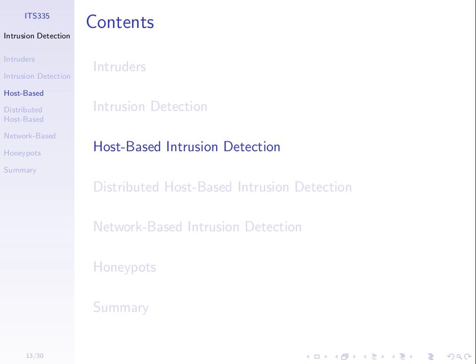We want to be able to detect when someone's trying to intrude into our computer system or network — when someone's trying to attack us and log in remotely or do something malicious. We've talked about the types of intruders and the general concepts of intrusion detection, but we'll come back to that with some examples today.